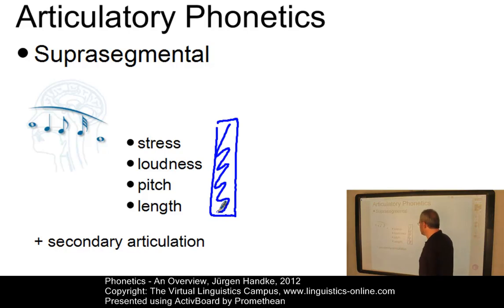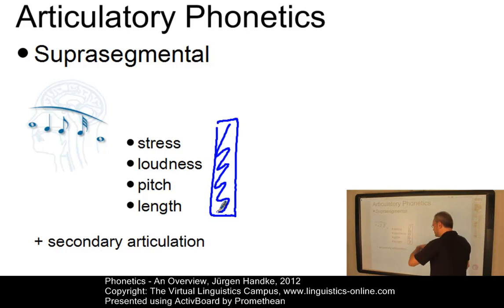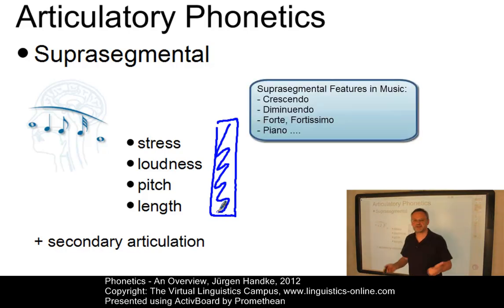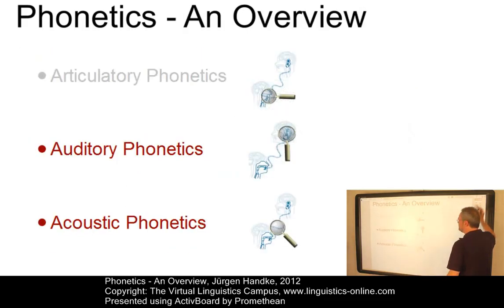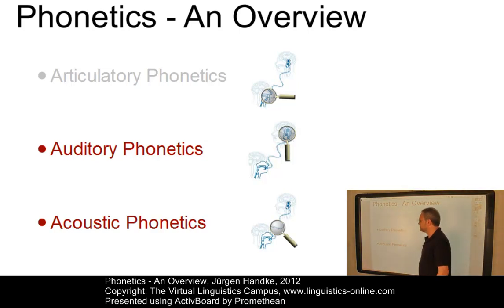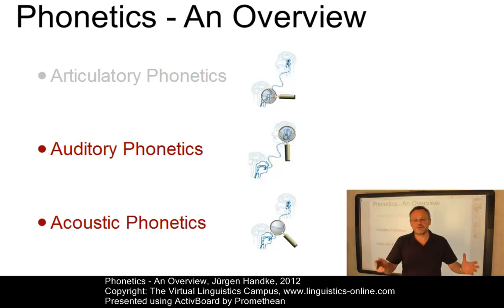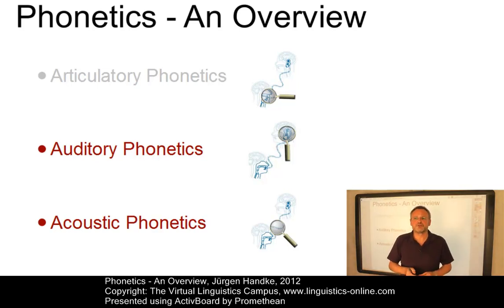We also have aspects such as secondary articulation. In music, to draw the parallel again, suprasegmental features would be something like crescendo, diminuendo, or forte, to name a few. The two remaining branches of phonetics are often treated in an interdisciplinary way, by means of a combination with psychology, anatomy, acoustics, and physiology, to name a few. Let us briefly discuss them.